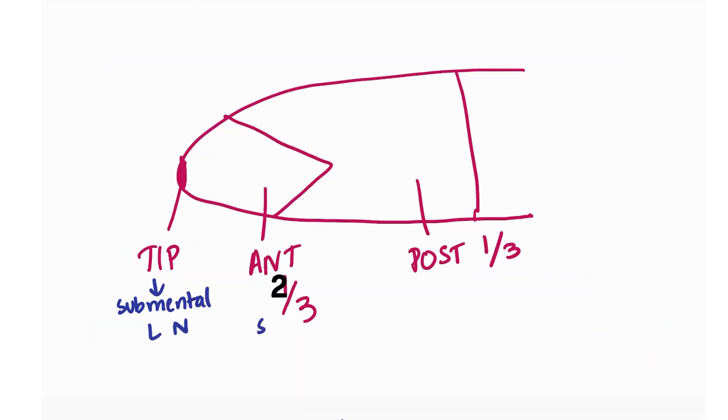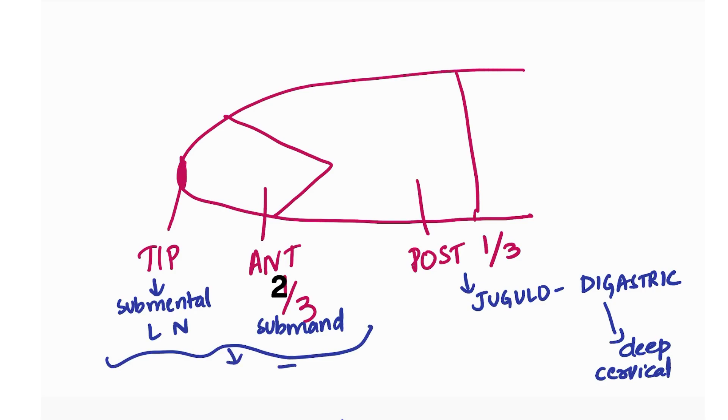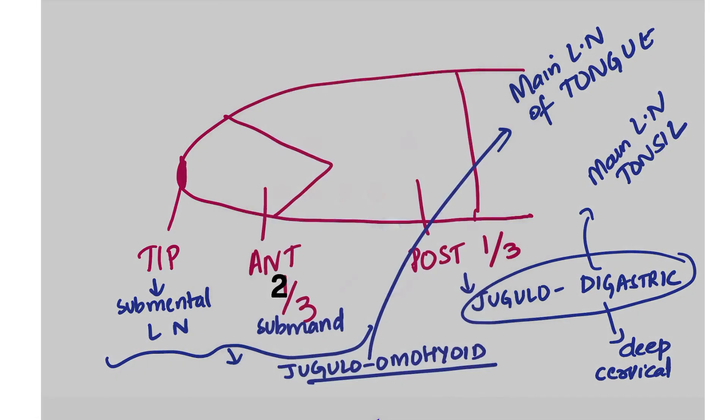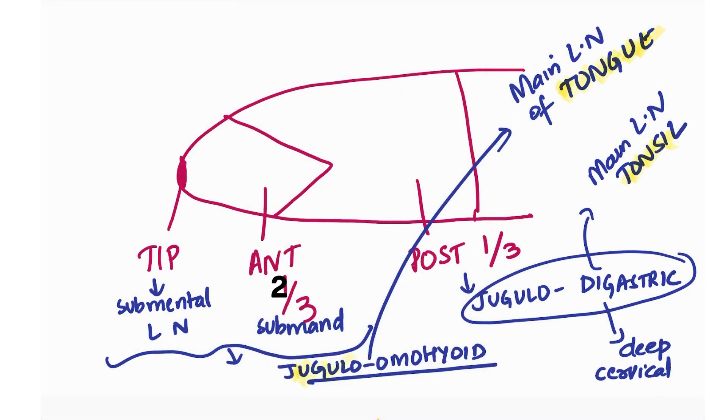Coming to lymphatic drainage: the tip of the tongue drains into submental lymph nodes, anterior two-third to submandibular lymph nodes, and posterior one-third to jugulodigastric lymph nodes near the tonsil. Submental and submandibular eventually drain into juguloomohyoid lymph nodes. Jugulodigastric is the principal lymph node of the tonsil, and juguloomohyoid is the principal lymph node of the tongue.